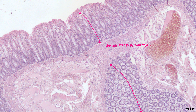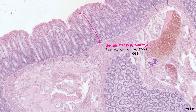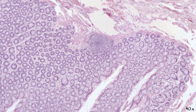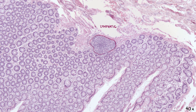Lamina propria is a layer of loose connective tissue. There is an abundance of cells in this layer — not only fibroblasts and other connective tissue-related cells, but also lymphocytes. From time to time, we can see lymphatic nodules which even reach the submucosa. The presence of lymphocytes is a reaction to the great number of bacteria present within the large intestine.